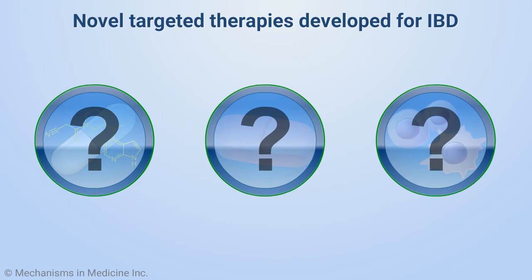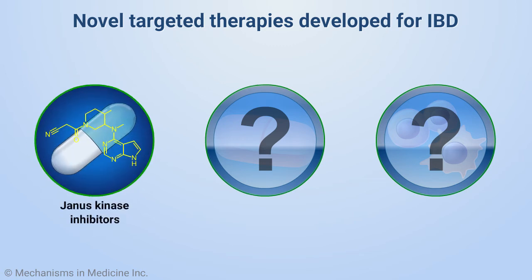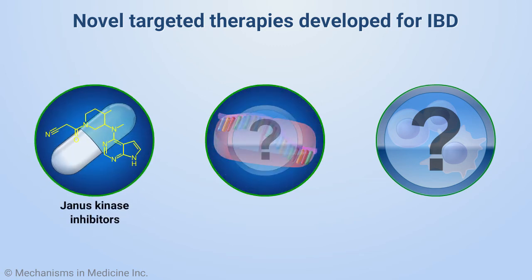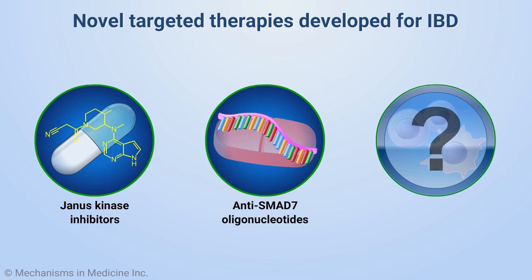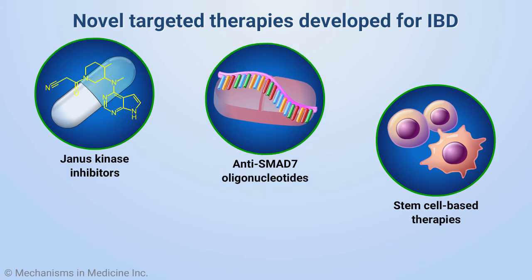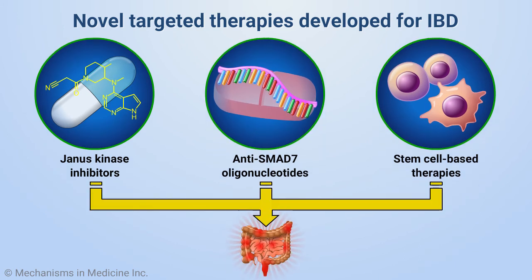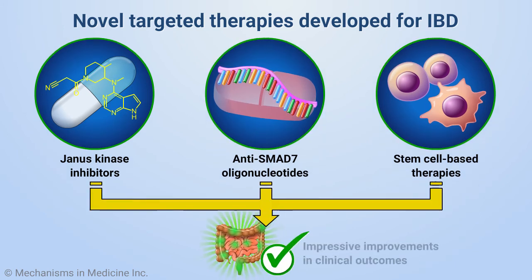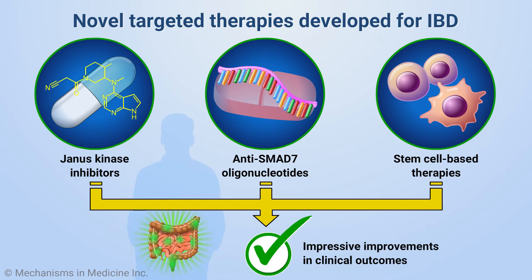As a result of advances in the understanding of IBD pathogenesis, novel targeted therapies, including Janus kinase or JAK inhibitors, anti-SMAD7 oligonucleotides, and cell-based therapies have recently been developed. This rapidly growing armamentarium of targeted therapeutics has shown significant benefit in clinical outcomes in patients with IBD, and details about their mechanisms of action will be discussed in the following animations.